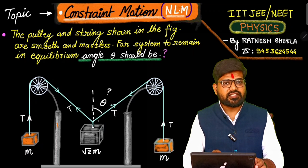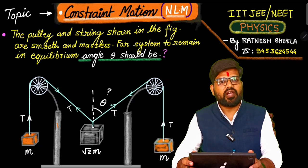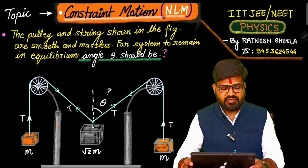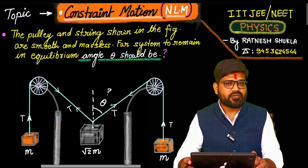At the midway of the string there is another block of mass √2m connected. Now if system is remaining in equilibrium then we have to determine the value of the angle theta shown in the figure.